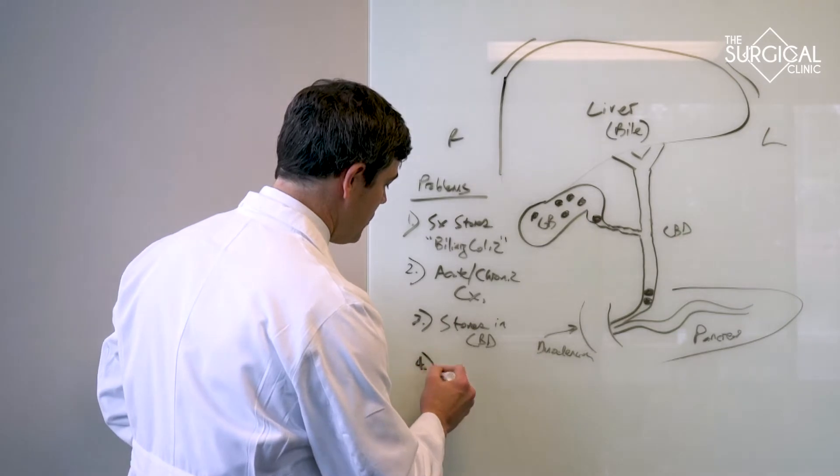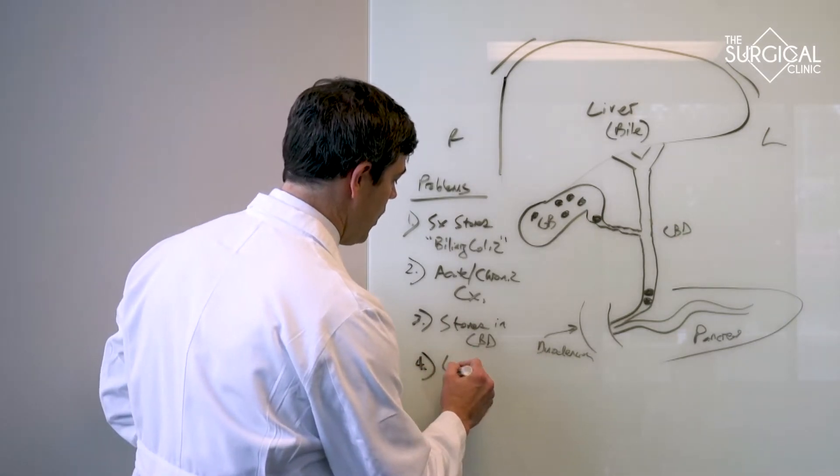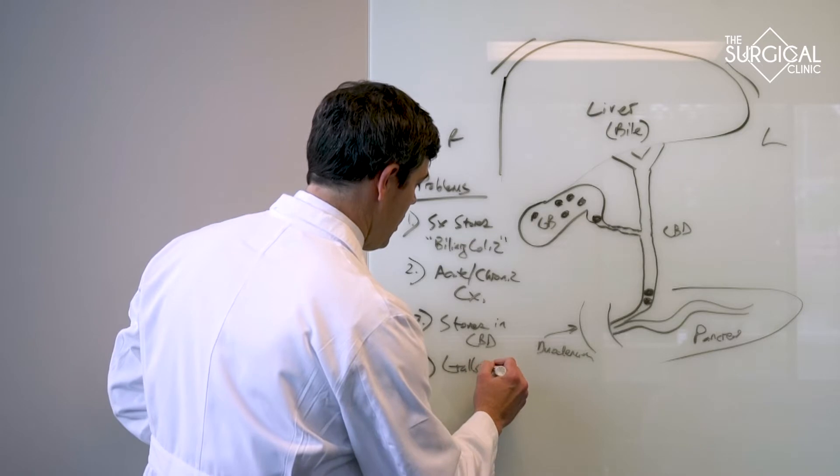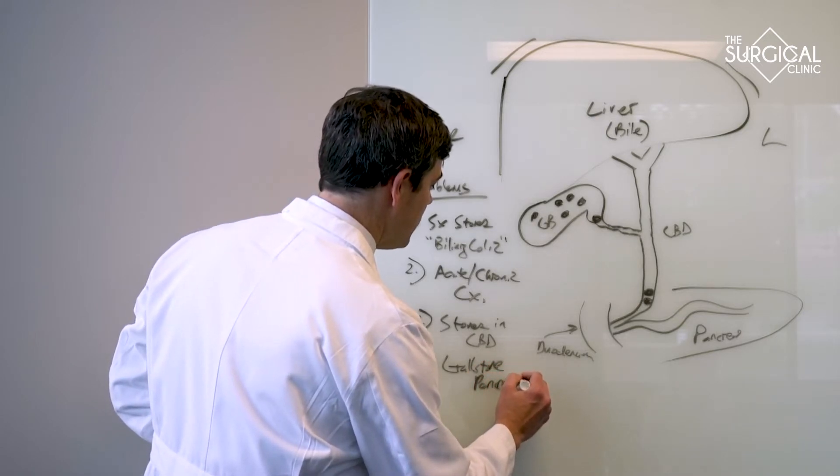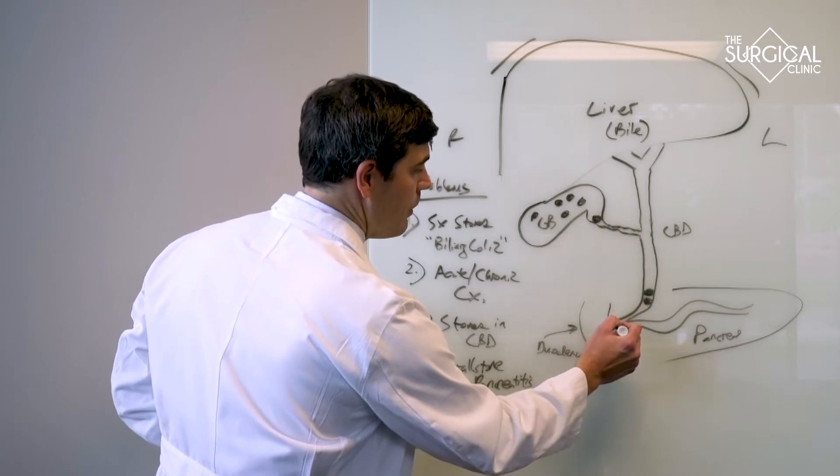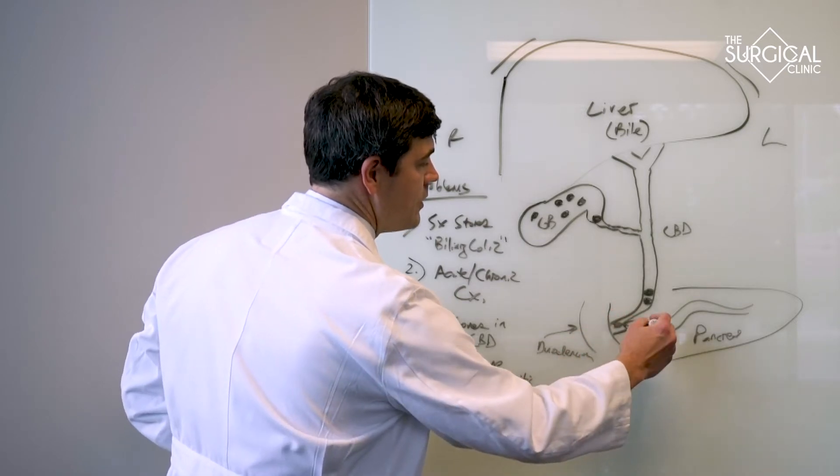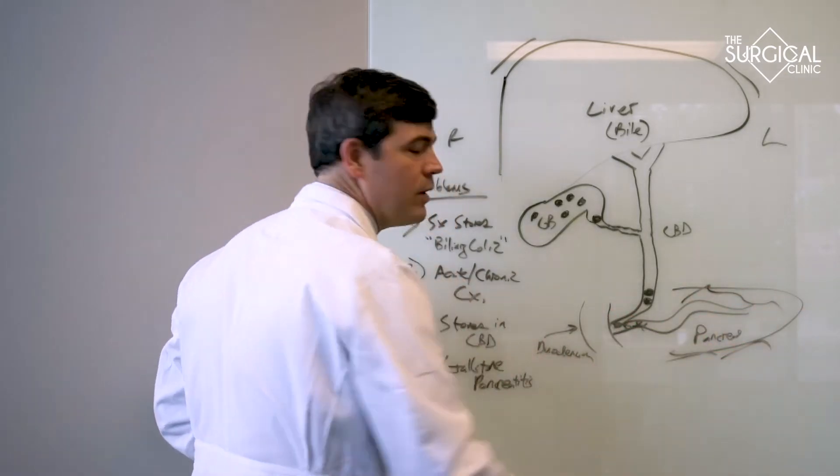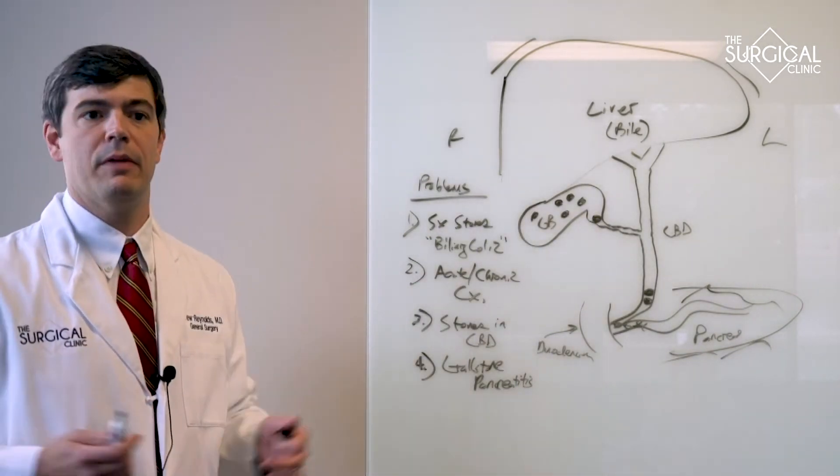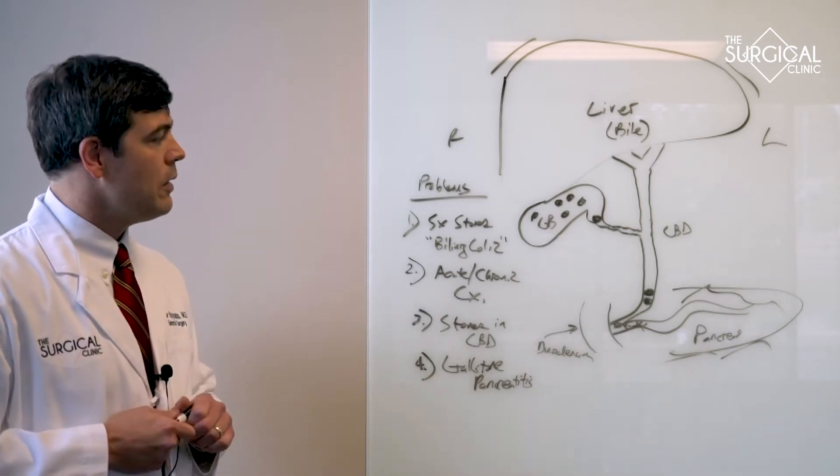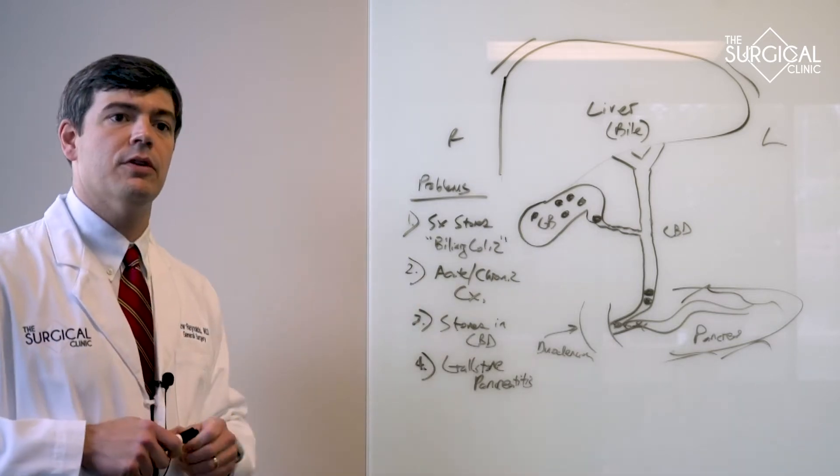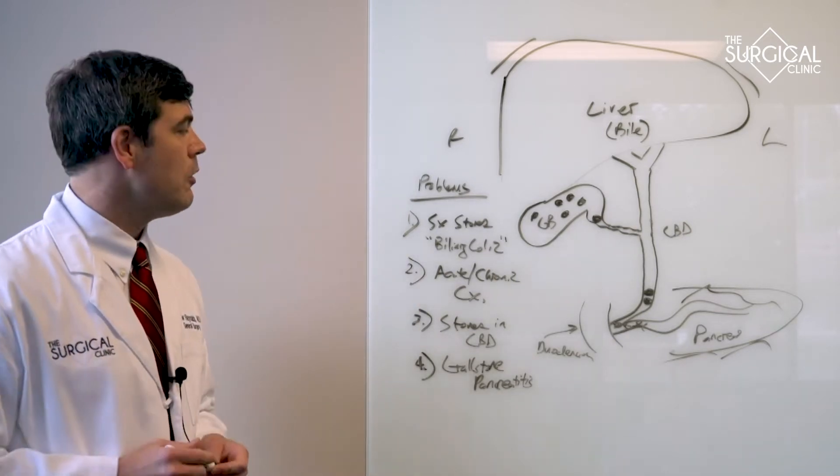Other things that can happen with stones is you can get what's called gallstone pancreatitis. And this is where you have stones that get all the way down to the bottom of this little tapered bile duct and they block the outlet of the pancreas and the pancreas gets backed up and inflamed and you get pancreatitis. And that can make you very ill and that usually results in hospitalization as well. So if you have stones in your gallbladder and we have any inkling that they're giving you trouble it's a good idea to have your gallbladder removed.